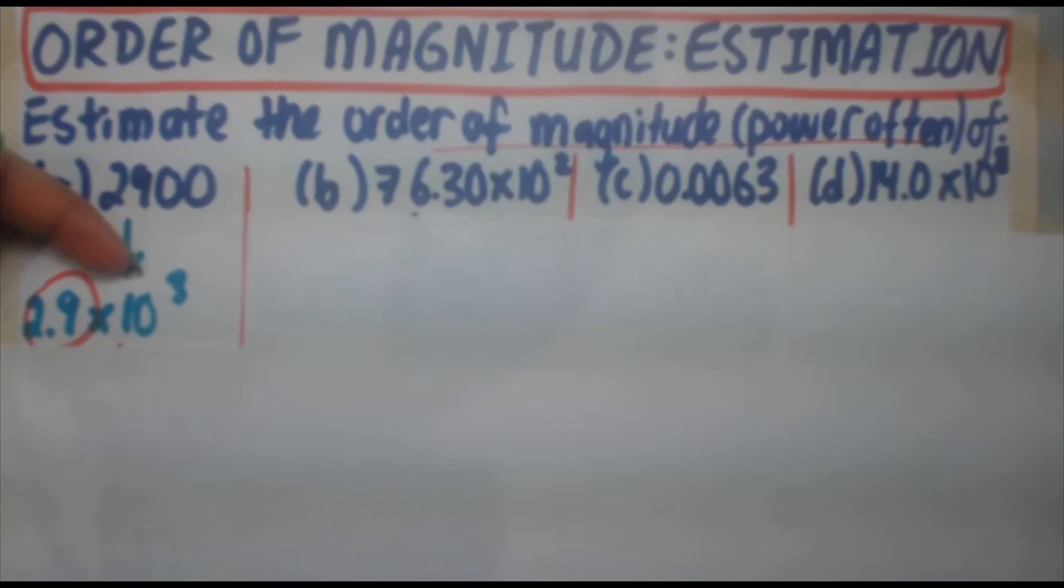But in fact, there's technically two boundaries for every number. And in this case, this number is either closer to 1 times 10 to the 3 or 10 times 10 to the 3. Because 10 times 10 to the 3 is actually 1 times 10 to the 4. So that's pretty much what you're asking yourself.